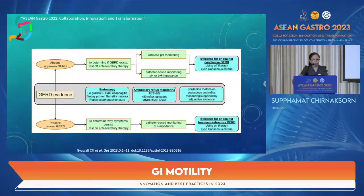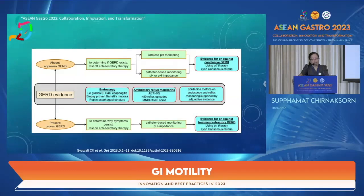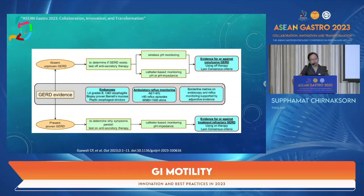When considering esophageal function testing, one should first assess whether there is proven GERD. If there is no prior evidence of GERD, pH monitoring or wireless pH monitoring is used to determine whether GERD exists, based on availability and cost. If the patient has proven GERD but symptoms do not respond well to adequate therapy, testing on therapy is used to determine why symptoms persist.